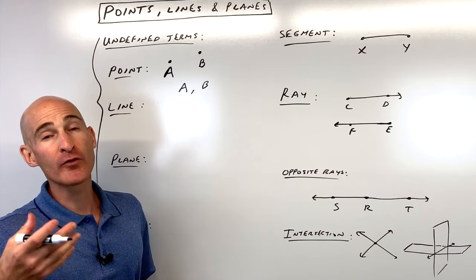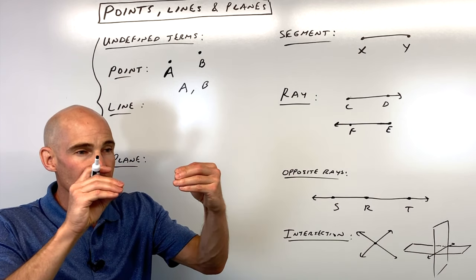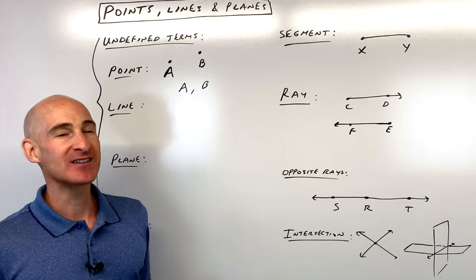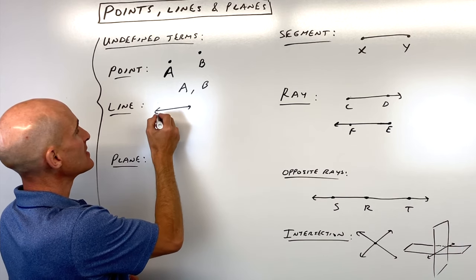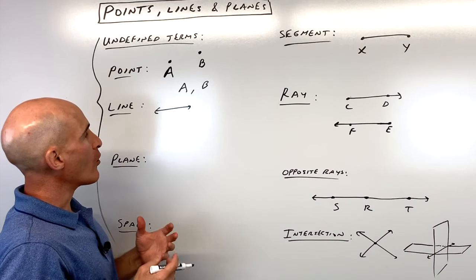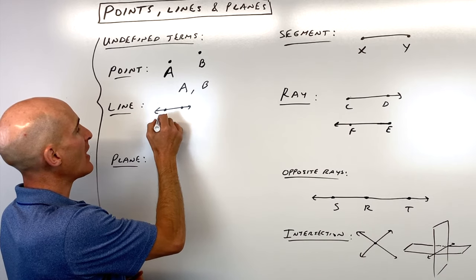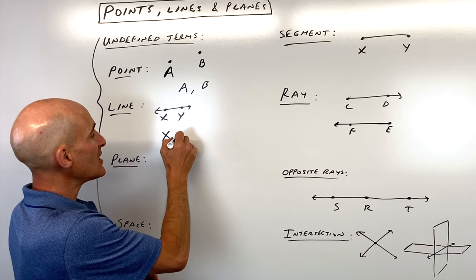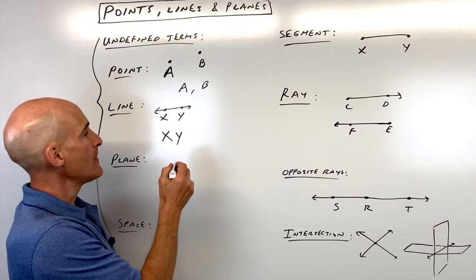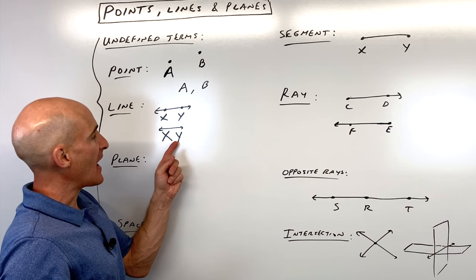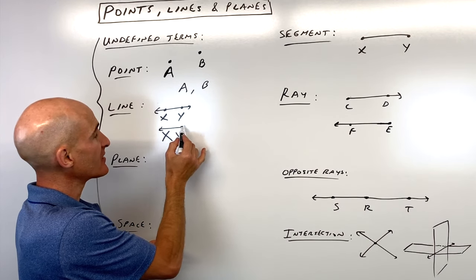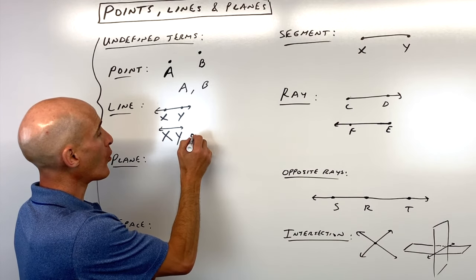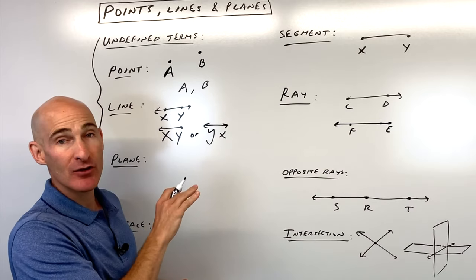Now when we talk about a line, you know from algebra one, a line goes in two directions and it keeps going forever and ever. It's a set of points and we know it looks something like this. But when you identify a line, you want to use two points that are on the line. Like say, for example, if you have a point X and Y that are on the line, the way you write it, the notation, it's kind of like a pictograph or hieroglyphics. You would draw X and Y and you would draw that line symbol above X and Y to indicate that it's a line that keeps going in both directions. Or you could say Y, X. It doesn't matter the order.